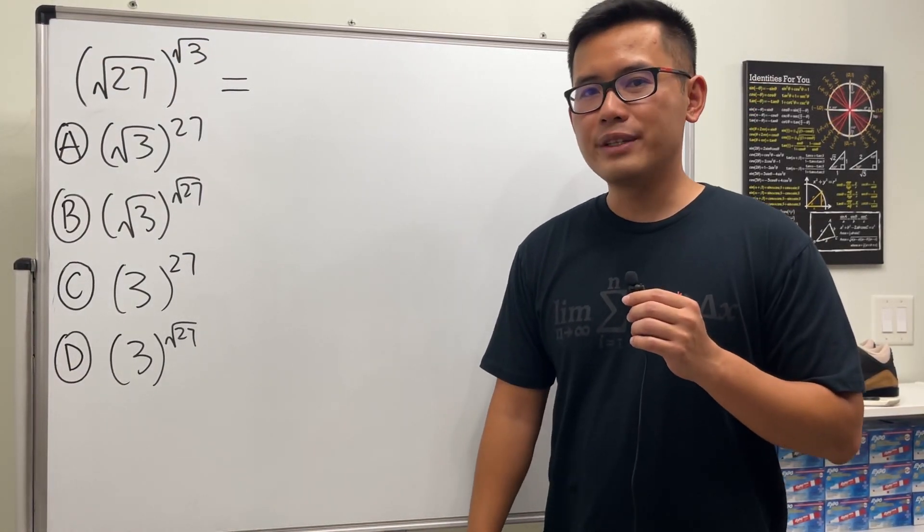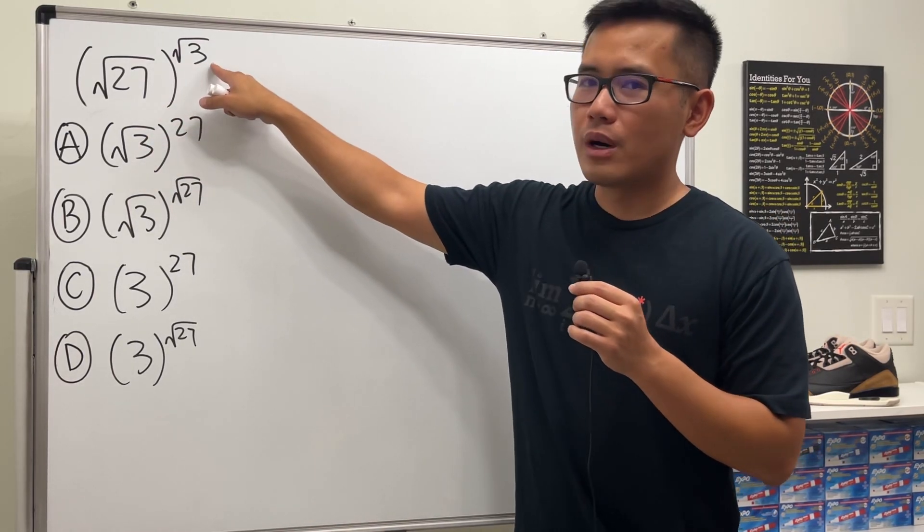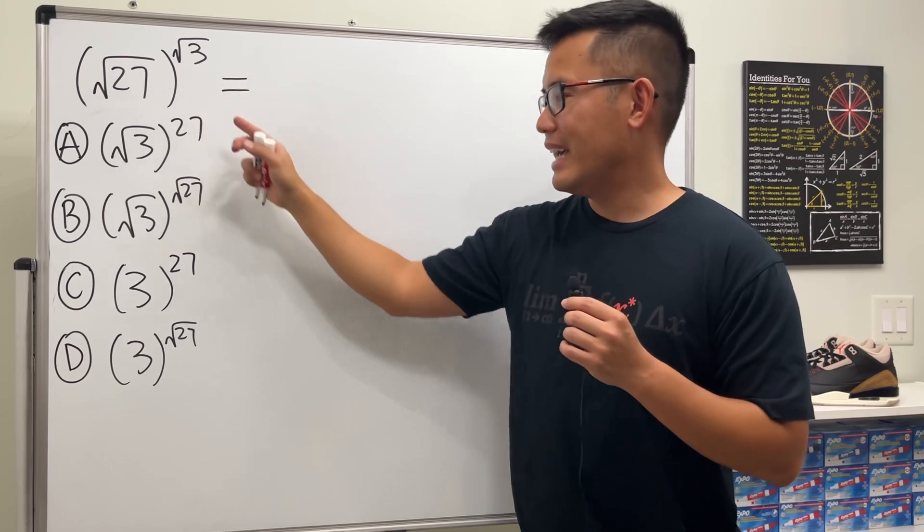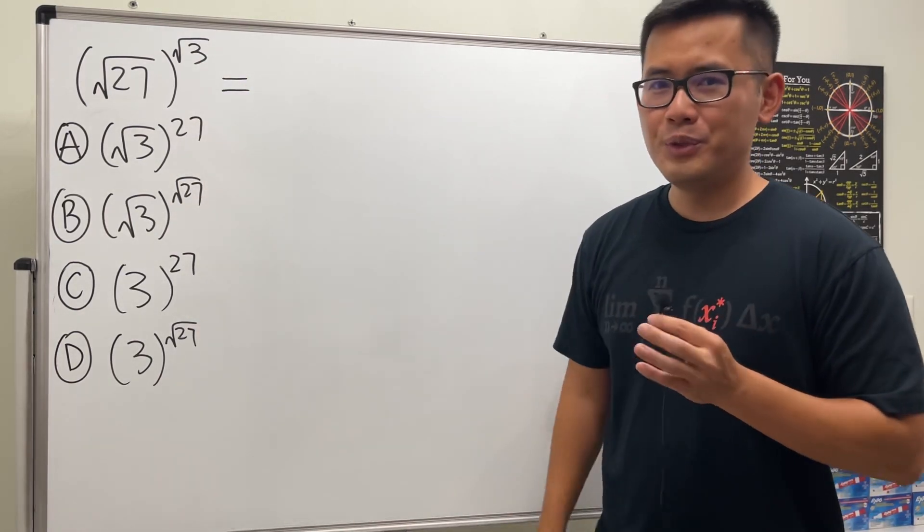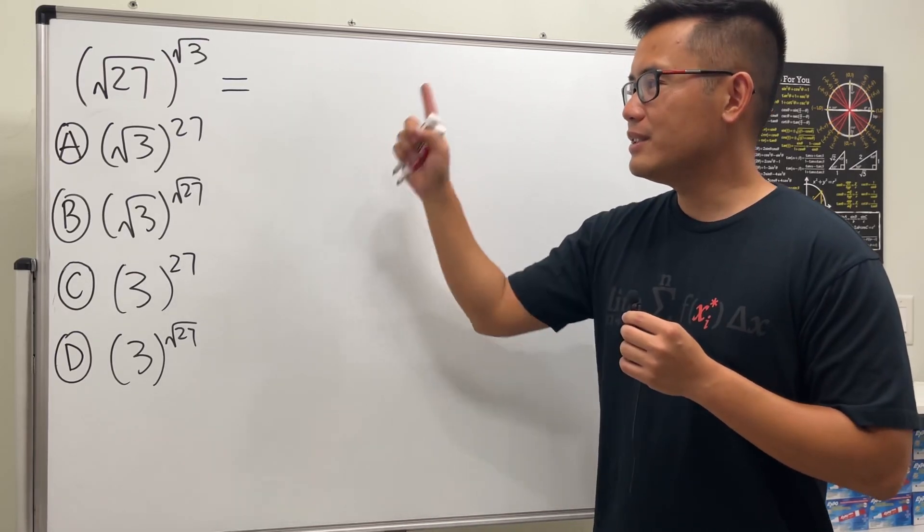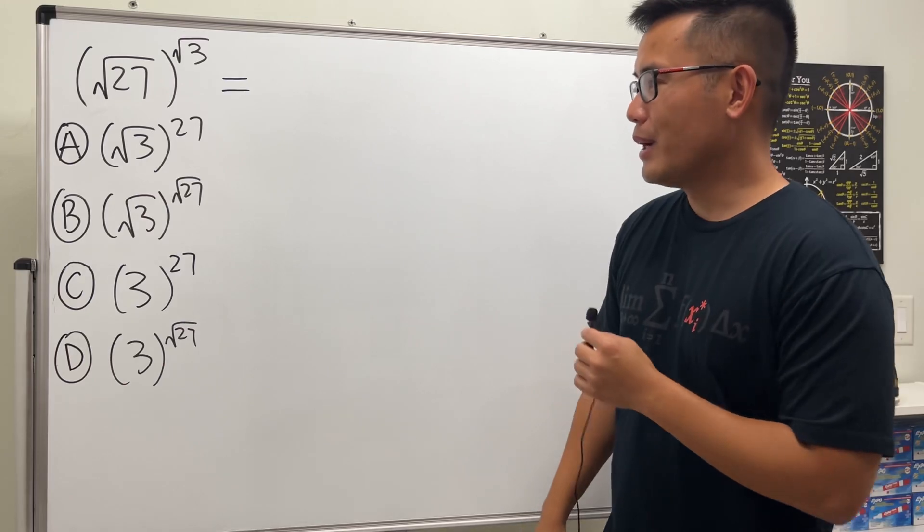Okay, I have a very interesting radical question for you guys. Here we have square root of 27 raised to the power of square root of 3, and I give you guys choices. This one is equal to which of these? You know the deal, please pause the video and try this first.